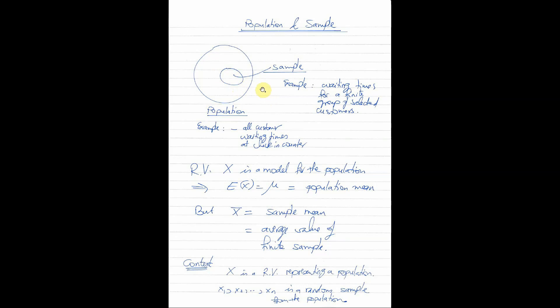So this is the population versus the sample. The population contains everything and the sample is just a subset chosen from the population which is finite and much smaller. The problem with the population is that it might not be known or it's really large — almost impossible to find. If I want to know the exact average height among all men above 18 years old, one way is to know the entire population, knowing the height of every single man above 18 years old.